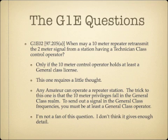When may a 10 meter repeater retransmit the 2 meter signal from a station having a Technician class control operator? The answer is only if the 10 meter control operator holds at least a General class license. Any amateur can operate a repeater station, but the trick is that 10 meter privileges fall in the General class realm. So to send out a signal in the General class frequencies, you have to be at least a General class operator.